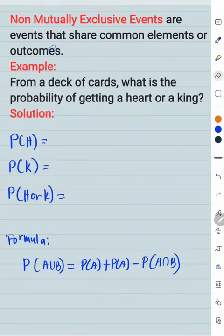Non-mutually exclusive events are events that share common elements or outcomes. From a deck of cards, what is the probability of getting a heart or a king?